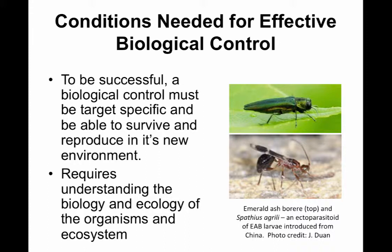This really requires an understanding of the biology and ecology of the organisms and the ecosystem. When emerald ash borer was discovered in the late 1990s in the Detroit metro area, the U.S. Forest Service and APHIS devoted significant money and about 15 years of study — including traveling to Asia to study the ecology and biology of emerald ash borer and its natural predators — to find a biological control solution.